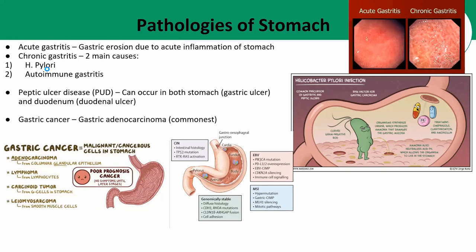The second pathology of the stomach is peptic ulcer disease. Peptic ulcer disease can occur in the stomach — known as a gastric ulcer — or the duodenum — known as a duodenal ulcer. The most common cause of both is H. pylori. The second commonest cause is NSAIDs. The third commonest cause is Zollinger-Ellison syndrome — basically a gastrinoma cancer that causes hypersecretion of gastrin, resulting in hypersecretion of acid. Gastric ulcer is associated with an increased risk of gastric cancer, whereas duodenal ulcer is usually benign. Food worsens gastric ulcer symptoms but relieves duodenal ulcer symptoms — when you eat food, there will be increased acid production.